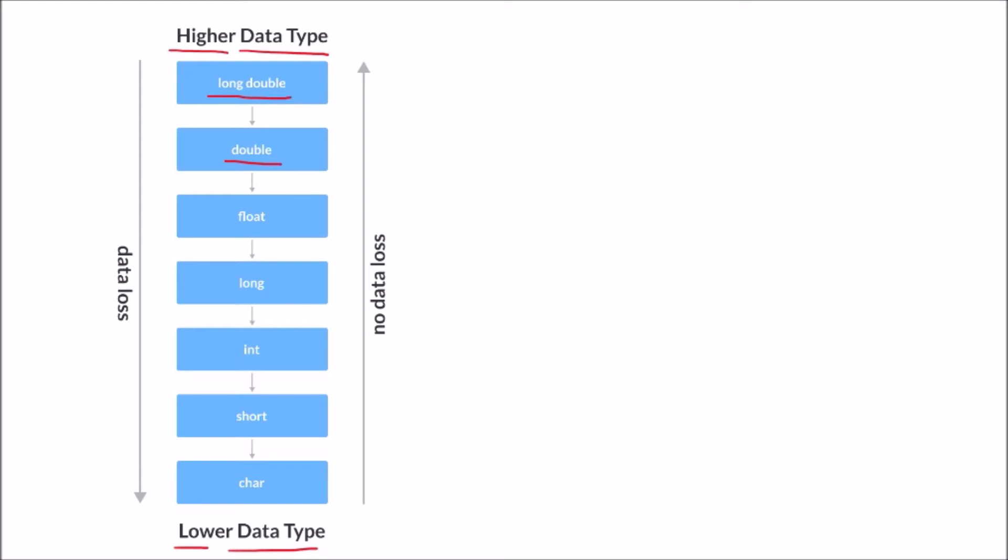Then downwards float, then long, integer, short, and character. So if we are going from lower to higher, then this way we can see that there is no loss of data. So there is no loss of data.